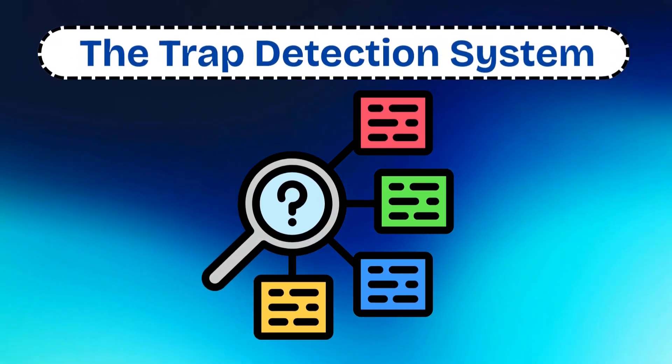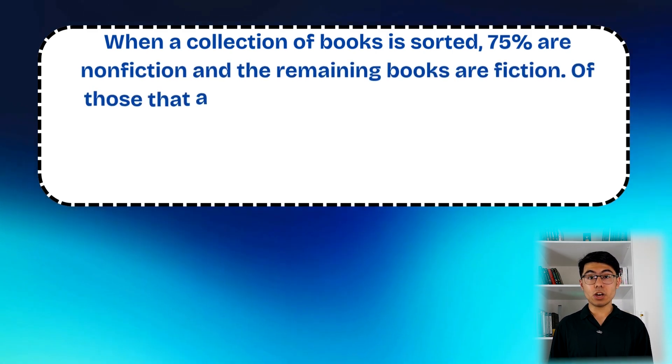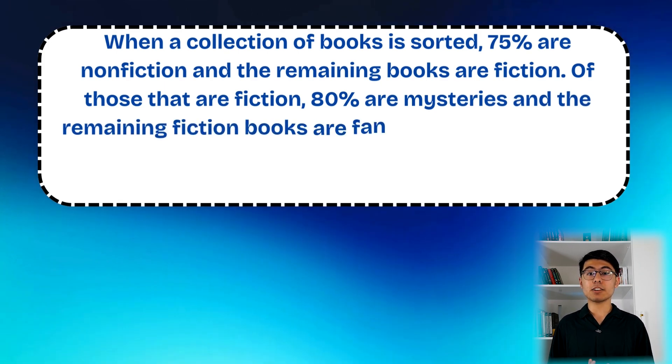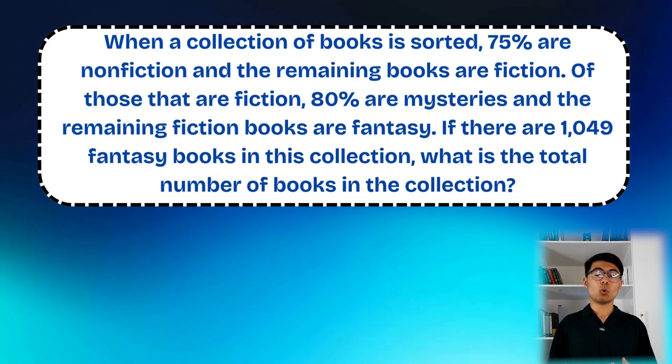Now let's talk about the Trap Detection System. Let me show you exactly how it works with a real example of how the College Board creates nested percentage traps — one of their favorite skeleton structures. The original question is: in a collection of books, 75% are non-fiction and the remaining books are fiction. Of those that are fiction, 80% are mysteries and the remaining fiction books are fantasy. If there are 1,049 fantasy books in this collection, what is the total number of books?